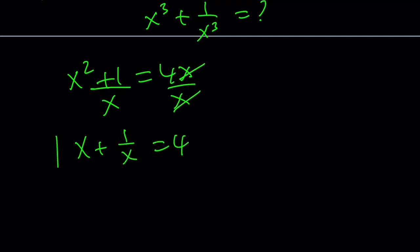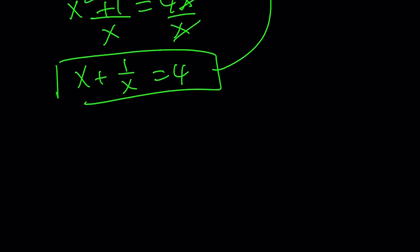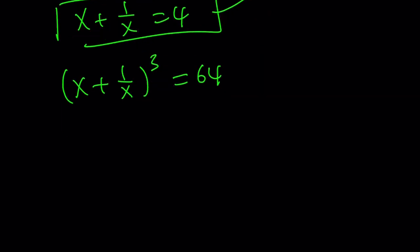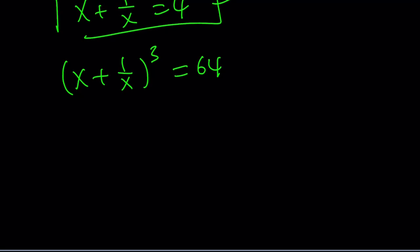Now, we know this. And our goal is to find the sum of cubes. So we're just going to go ahead and cube this expression. If we cube it, we're going to get 64. And if you expand it, you're going to get the following: a cubed plus b cubed plus 3ab times a plus b. That's the formula I use usually for sum of cubes or cube of a sum, sorry. Equals 64.